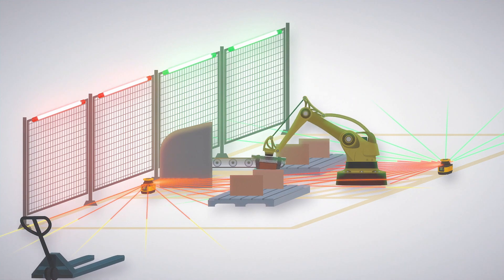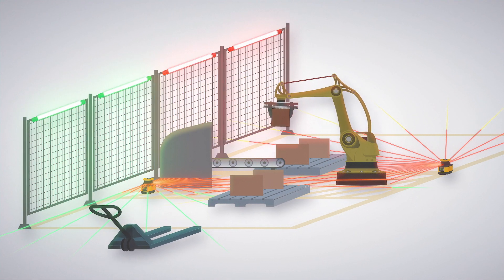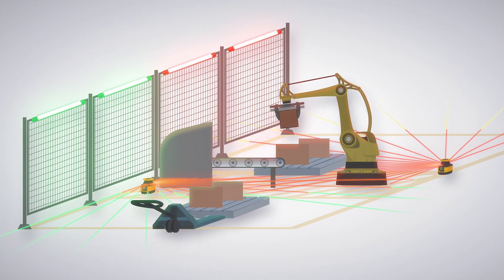If work cells need to be shared collaboratively between workers and robots, EasyStatus lights can intuitively communicate which zones workers can safely enter by illuminating safe areas in green and unsafe zones in red.